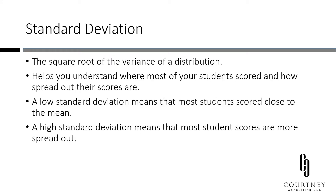Finally, let's look at standard deviation. Of the three measures of variability we will discuss, this is perhaps the most commonly reported in education performance reports. Formally, it is the square root of the variance of a distribution. It helps you understand where your students scored in relation to the mean. A low standard deviation says that most students are performing around the mean, while a higher standard deviation tells you that your scores are more spread out.